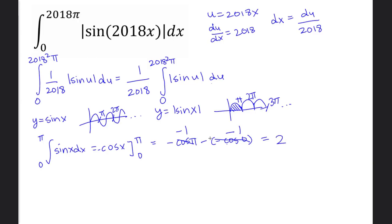Now we multiply 2 times 2018² to get the area of these bumps until 2018²π. This is the same as our integral.